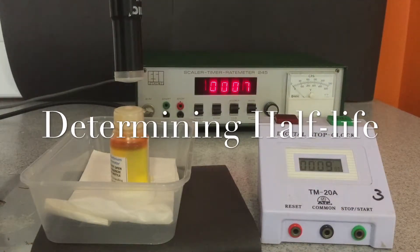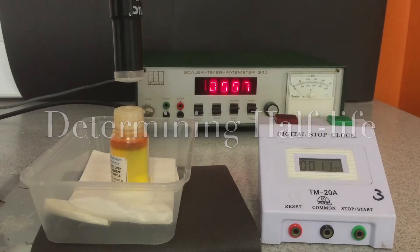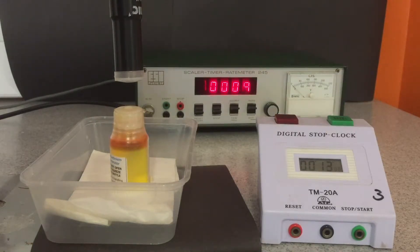To measure the rate of radioactive discharge from the protactinium, the Geiger-Müller tube is clamped above the protactinium generator. This is connected to the scalar timer and an external timer is used to measure the discharge over time.